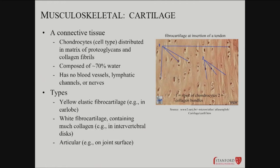The chondrocytes are a cell type that lives just like osteoblasts. They live in a matrix of proteoglycans, which are protein and sugar structural components of the extracellular matrix. And again, collagen fibrils — a different kind of collagen than what bone has. It's got a lot of water, 70% water in cartilage proper. There are no blood vessels or nerves, but around the periphery there are. So it's very dependent on diffusion to get nutrients in.